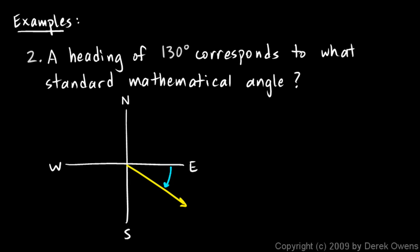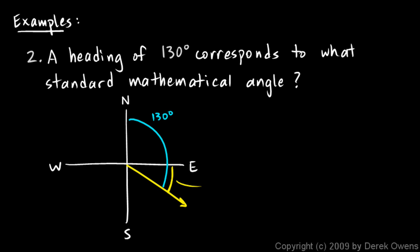In problems like these, it helps to find the small angle the direction makes with the x-axis — we sometimes call that a reference angle. If the heading is 130 degrees, and we know the right-angle mark is 90 degrees, then this reference angle has to be 130 minus 90, which is 40 degrees. So that direction is 40 degrees below the x-axis.